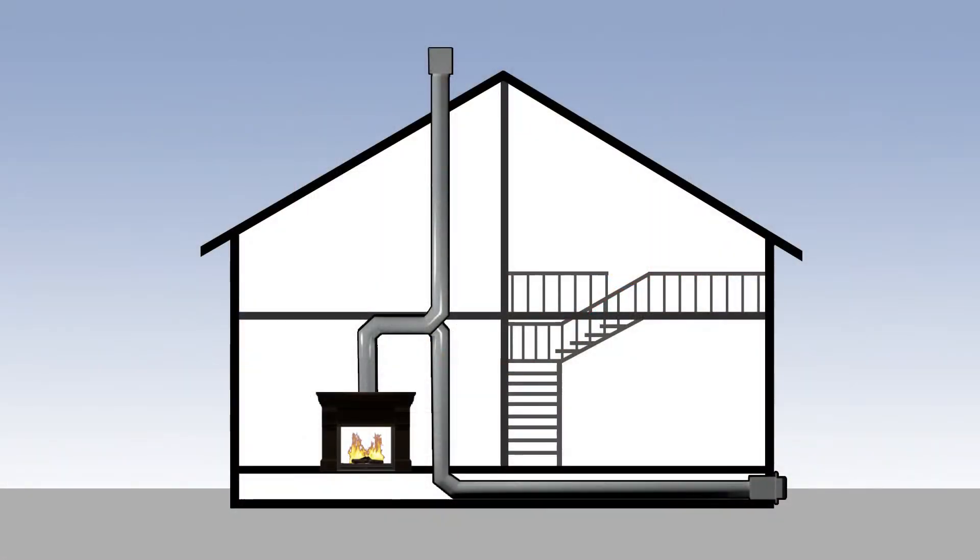The power vent accessory, mounted either vertically or horizontally, increases the allowable vent run from 40 feet up to 100 feet, allowing vent runs in any direction, even down. This opens up a world of installation possibilities.